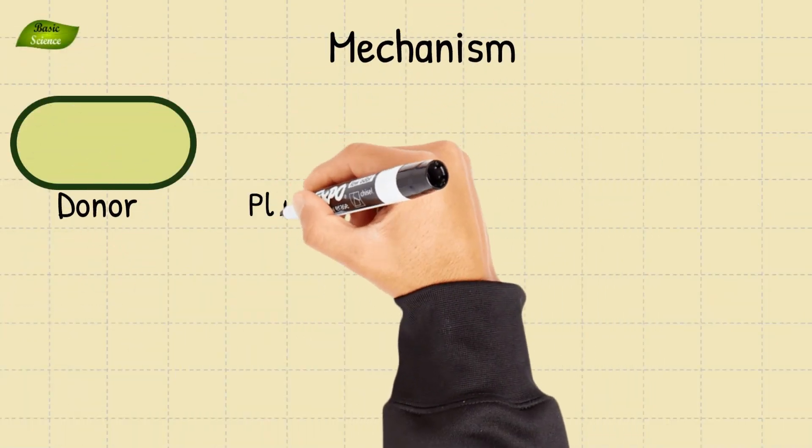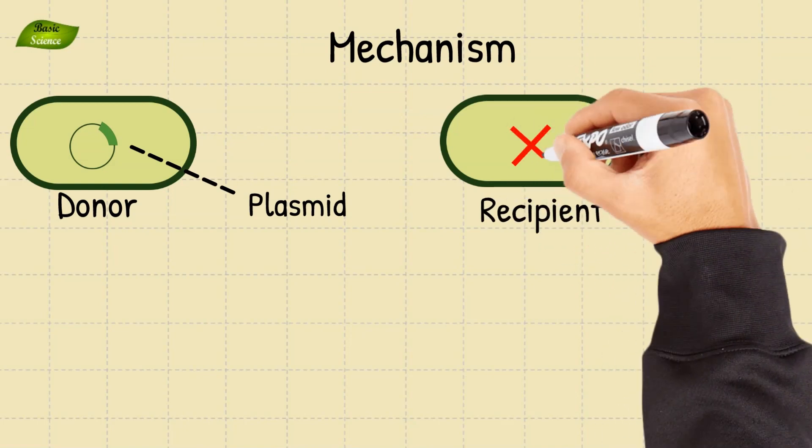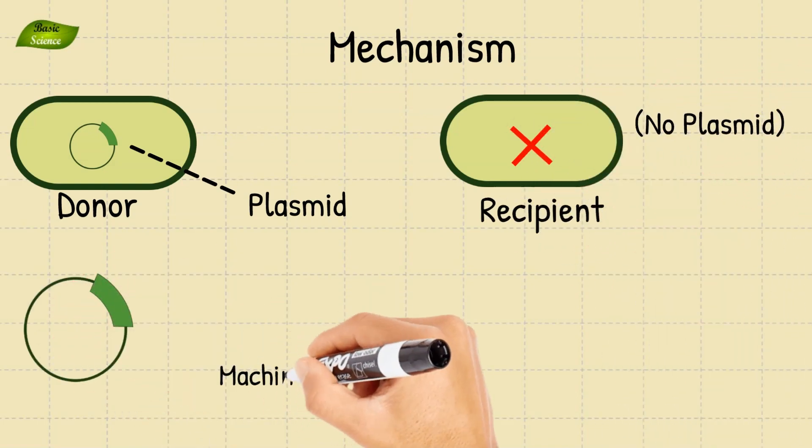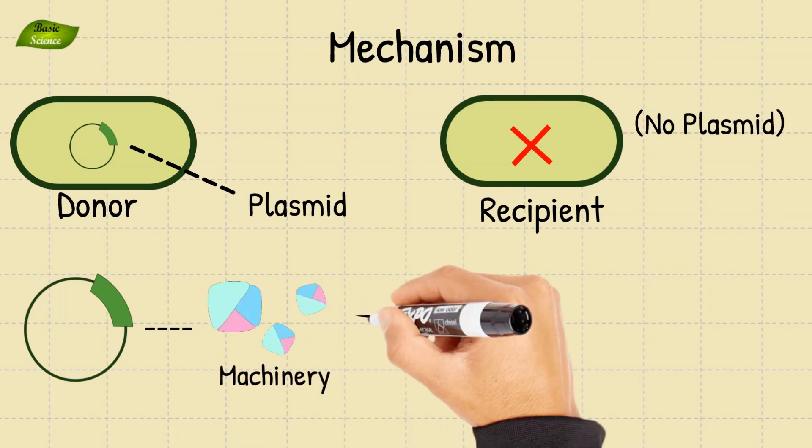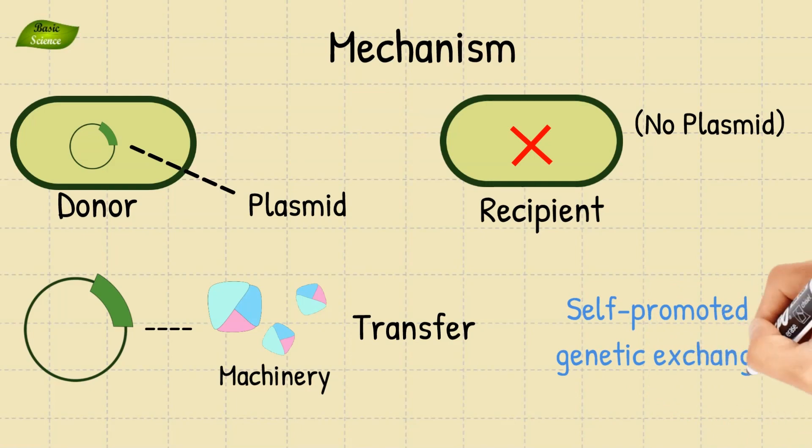Conjugation involves a donor cell with a conjugative plasmid and a recipient cell typically lacking such a plasmid. The conjugative plasmid encodes the necessary machinery for its own transfer, making this a self-promoted genetic exchange.